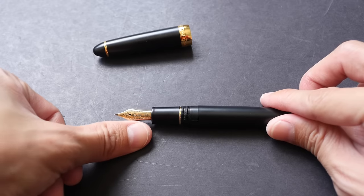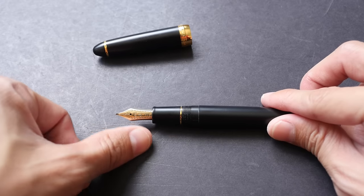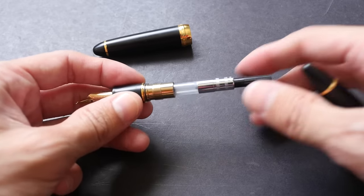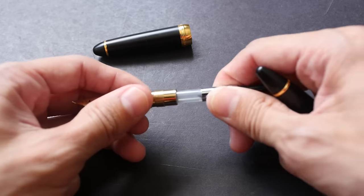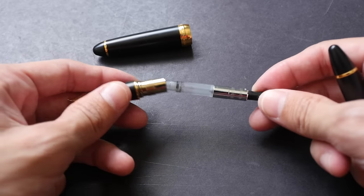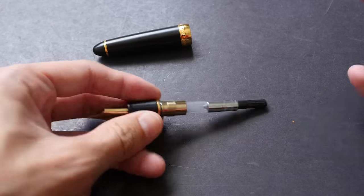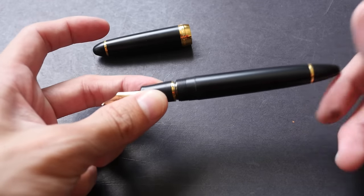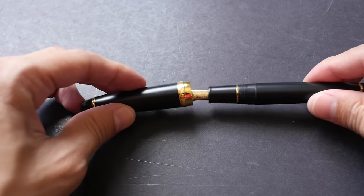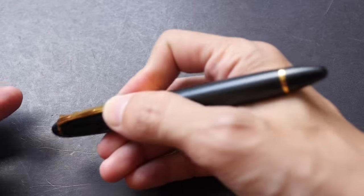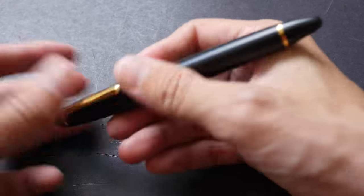It's quite long, longer than my fingernail actually. The body itself is 14 cm. This is the Sailor ink converter - I'm not sure if it's included, I cannot remember, but this is the standard ink converter used in most Sailor fountain pens.